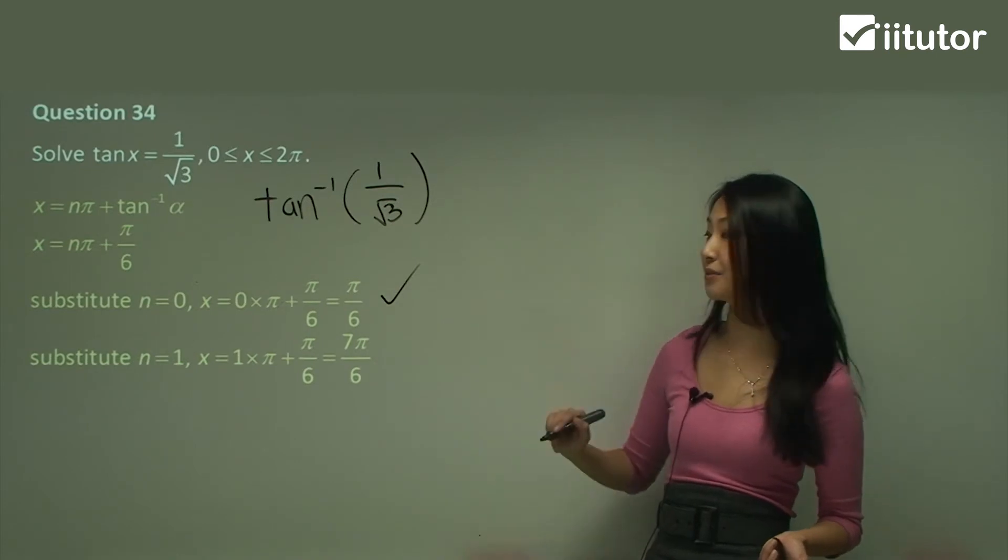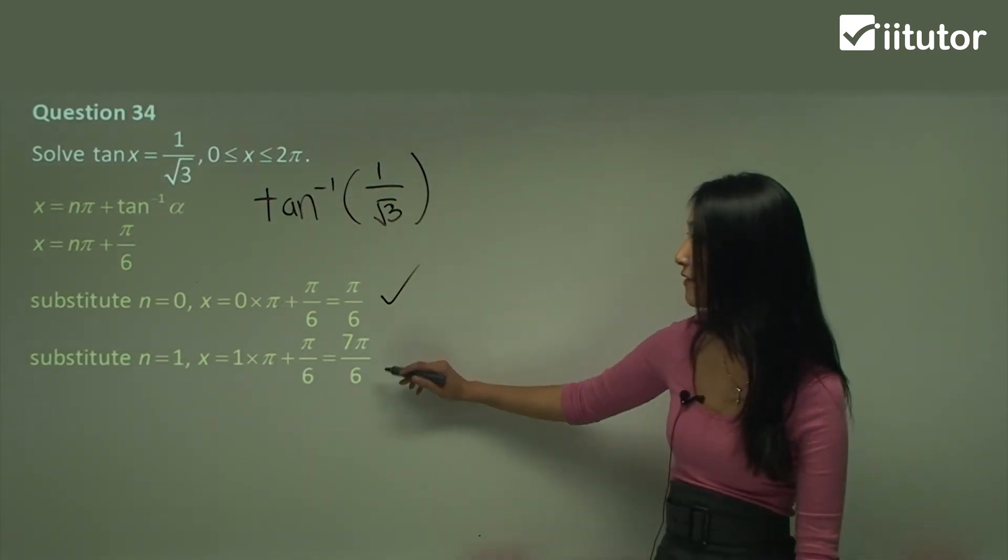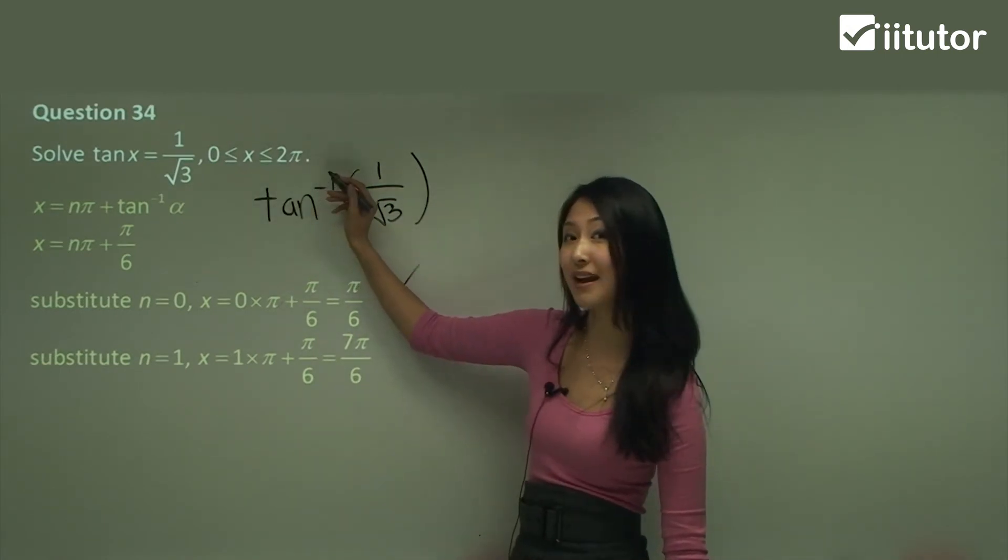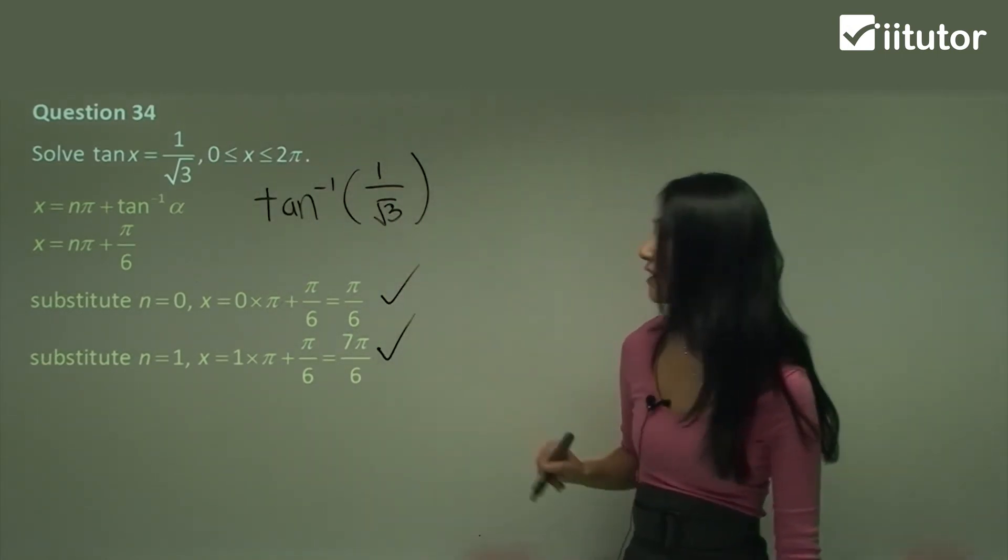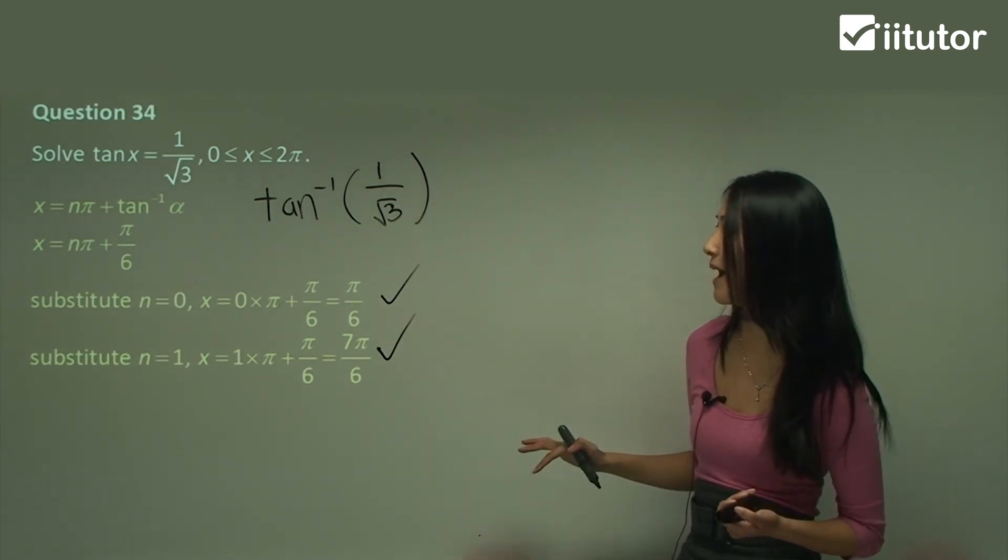Now, substituting in n equals one, we just have pi plus pi on six. Seven pi on six, is that between the domain? It is, isn't it? You can just give it a tick or something to show yourself that it does fit within that domain.